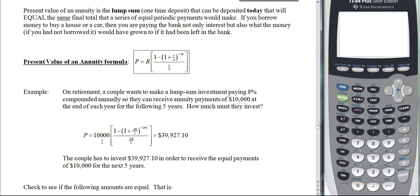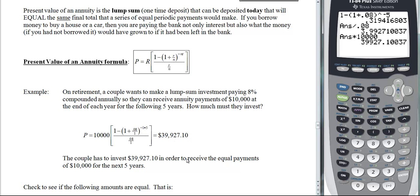So putting it in the appropriate positions, let's go ahead and try this numerator. I think I'll just not store 0.08. So 1 minus parentheses 1 plus 0.08 raised to the negative 5 divide by 0.08 and if I multiply by 10,000 that's where that amount came from. So the couple has to invest $39,927.10 in order to receive the equal payments of $10,000 for the next five years.